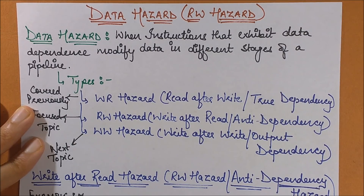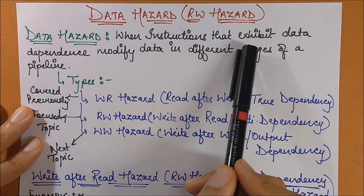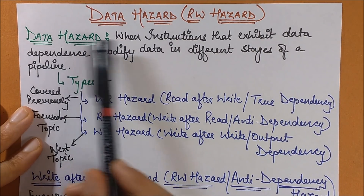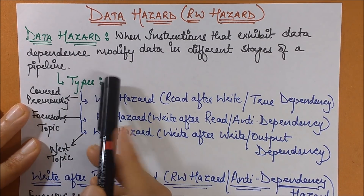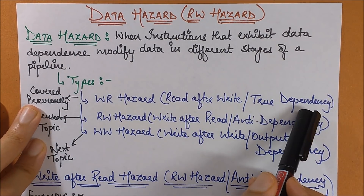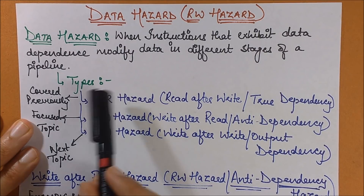Hello friends. We were discussing data hazards, and in this session we are going to take up the read-write hazard. We've already discussed the write-read hazard and the condition to check whether in a given set of instructions the write-read hazard will occur or not. So let's take a quick recap and then move on to our read-write hazard. The types of data hazard were: write-read hazard, also known as read-after-write and the true dependency problem. Then we have the read-write hazard, which we are going to discuss in this session.